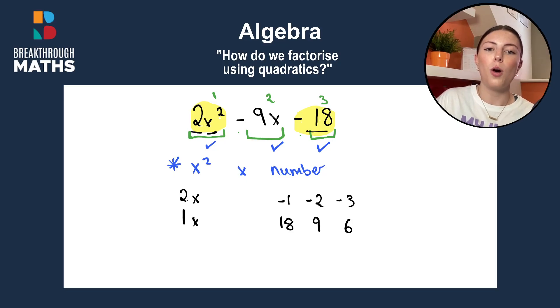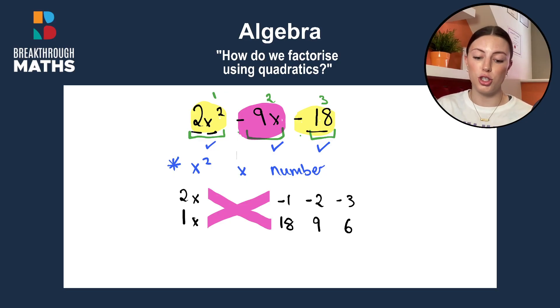Next up, what we need to do is we're going to have to cross multiply to try get the term in the middle, the minus 9x. So if we start off with the 2x by 18 first of all. So we want to cross multiply. So 2x by 18 will give us 36x, and we've minus 1 by x, and that'll give us minus x. So 36x minus x is 35x, and that's very far from what we want here, the minus 9x.